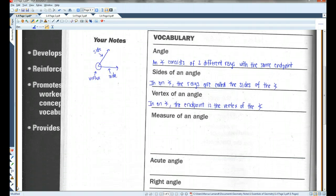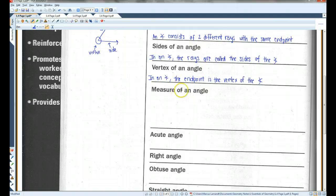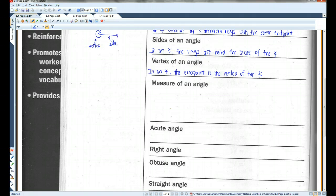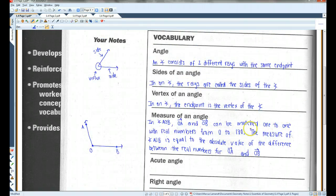Alright. The measure of an angle. At some point this unit, we're going to be doing a protractor activity in which I'll have you guys measure different kinds of angles. For now, just write down this definition and the different kinds of angles. I'll draw you guys some pictures. But we will be going more in-depth in how to measure angles later this unit. This definition is kind of long, so feel free to pause the video here if you need to.